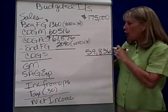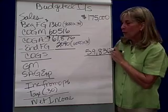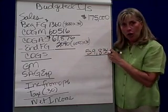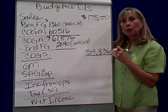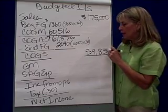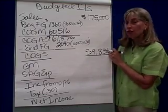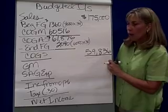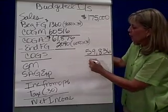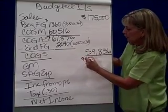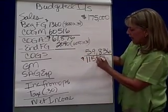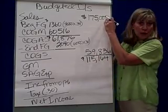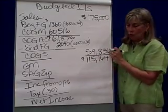Cost of goods available for sale minus ending finished goods gives me COGS — cost of goods sold. If I subtract cost of goods sold from my sales, I get my gross margin. So gross margin is going to be $115,164 — the difference between sales and cost of goods sold.